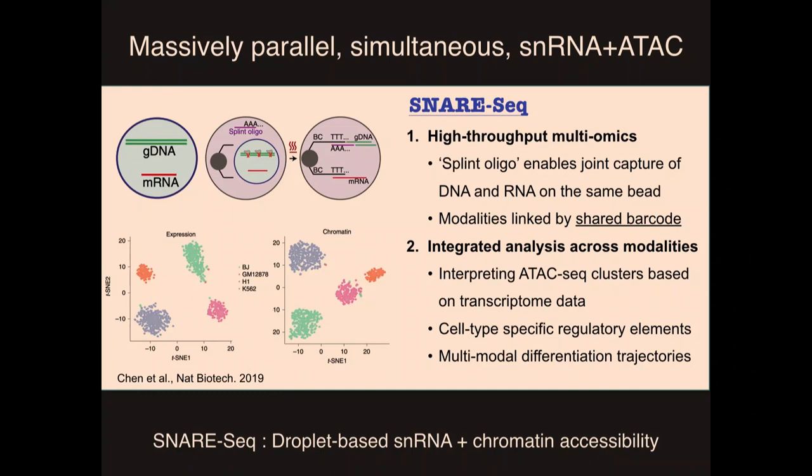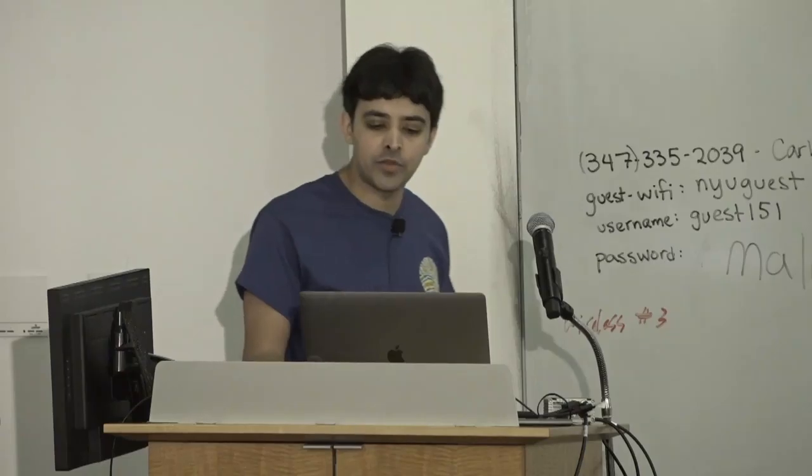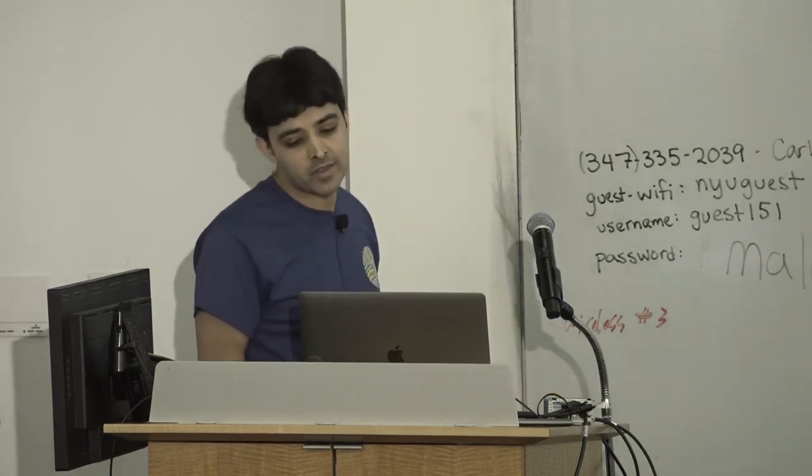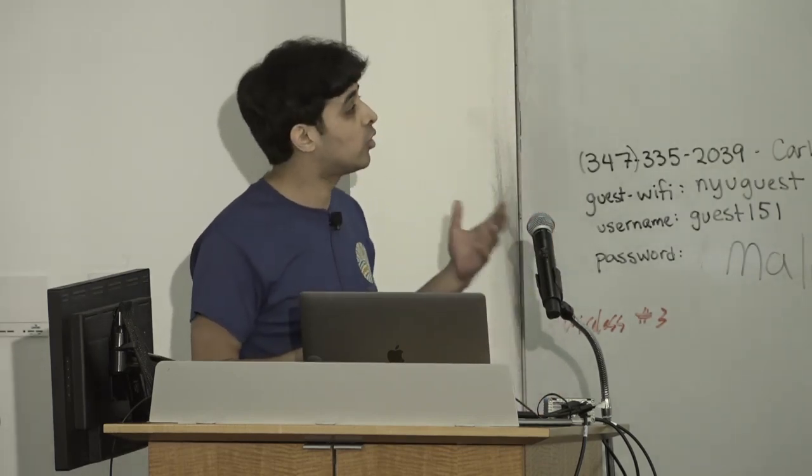Kun Zhang had one of the first really brilliant ideas for how to do this. His lab developed the use of something called a splint oligo. What the splint oligo does is it enables tagmented DNA to be captured or snared onto a polyadenylated bead — like something you'd use for Drop-seq. So both the mRNA and the DNA can hybridize onto the same bead, and the RNA and DNA from the cell share the same cell barcode, enabling you to link the two modalities together.